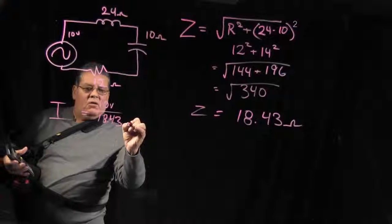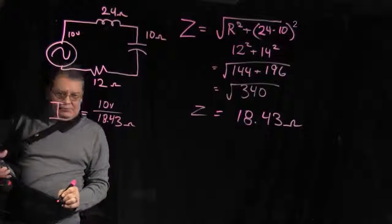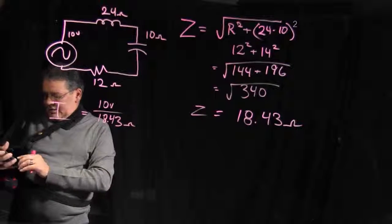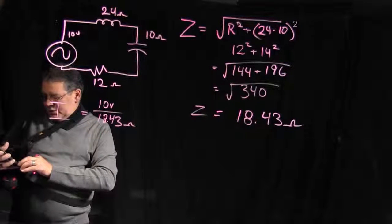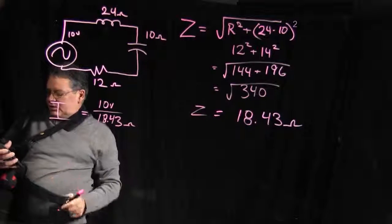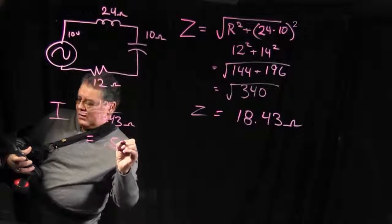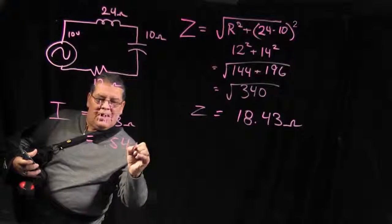So 10 divided by 18.43 equals 0.54 amps.